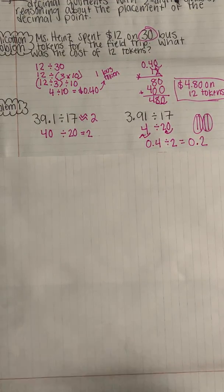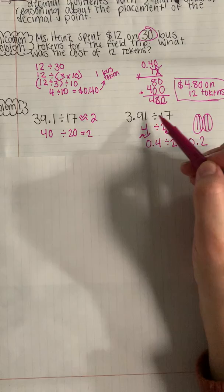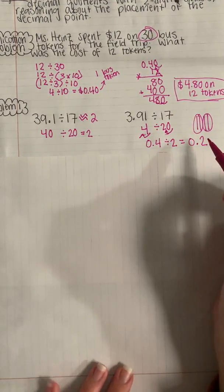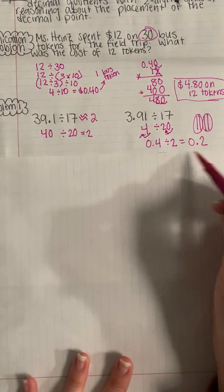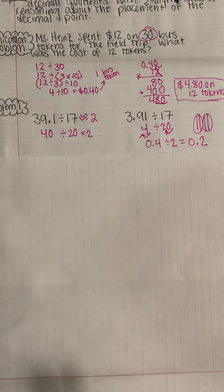And that makes sense because if I started with around $4 and broke it up into around 20 groups, I wouldn't have very much in each group. This would be like having 20 cents in each group.